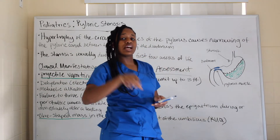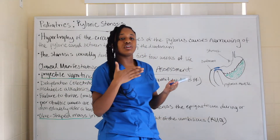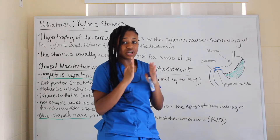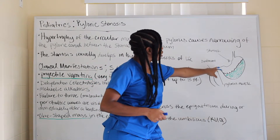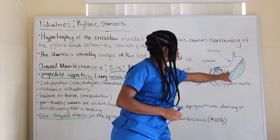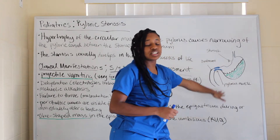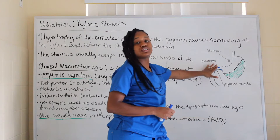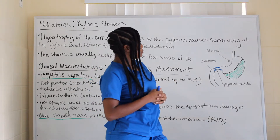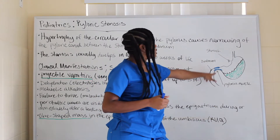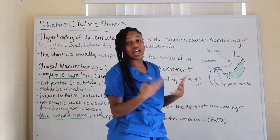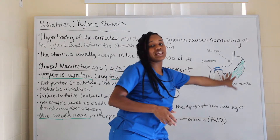If I have narrowing of my pyloric muscle, that circular muscle has been narrowed. Stenosis means a narrowing of something, so anytime you see anything with stenosis, just know it's a narrowing. With that narrowing, when the child is eating, the food cannot pass through normally — there's a disruption because the pathway is narrow.